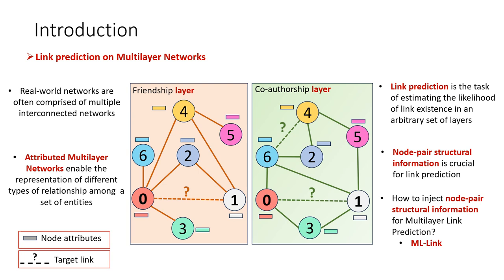Based on this idea, we propose ML Link, a framework for link prediction on multilayer networks, which is aimed at enhancing graph learning methods with multilayer structural information.